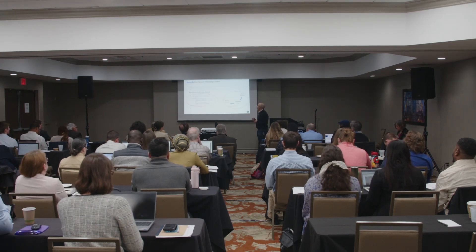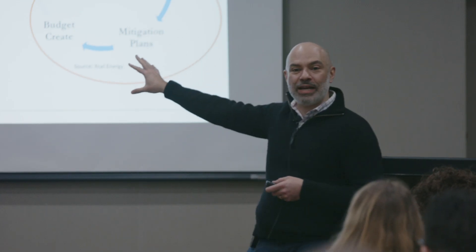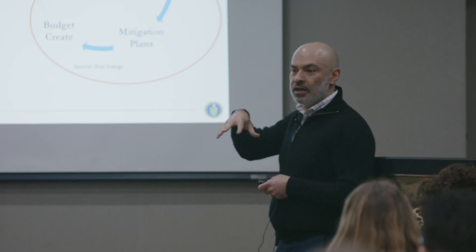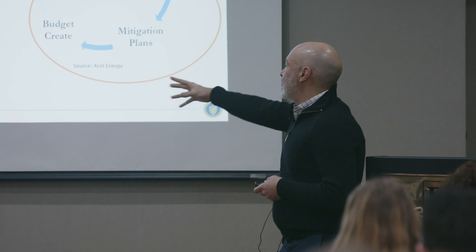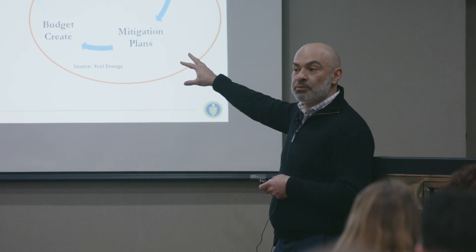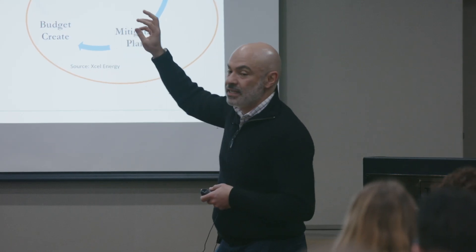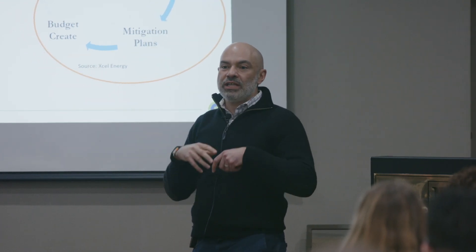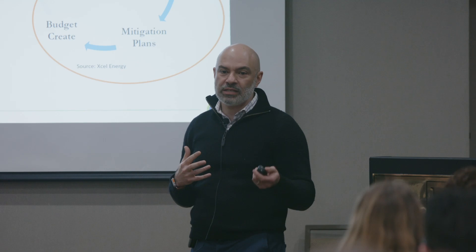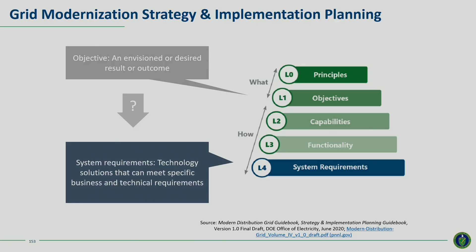We're really in that risk analysis through mitigation plan through budget piece of the planning process. Today we're focusing on risk analysis, solution identification, and thinking about that in the context of prioritization and cost-effectiveness methodologies. I want you to take a mental picture of this next slide because a lot of what I'll be talking about — cost-effectiveness, how we think about plans, how we link from objectives down to technologies and back — really ties to this taxonomy.